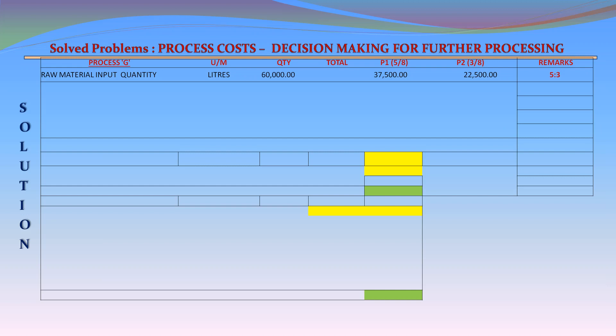Process G account. Unit measurement — Quantity, Total, P1 (5/8), P2 (3/8). Raw material input quantity: 60,000 liters — P1: 37,500 liters; P2: 22,500 liters, in the ratio of 5 to 3.